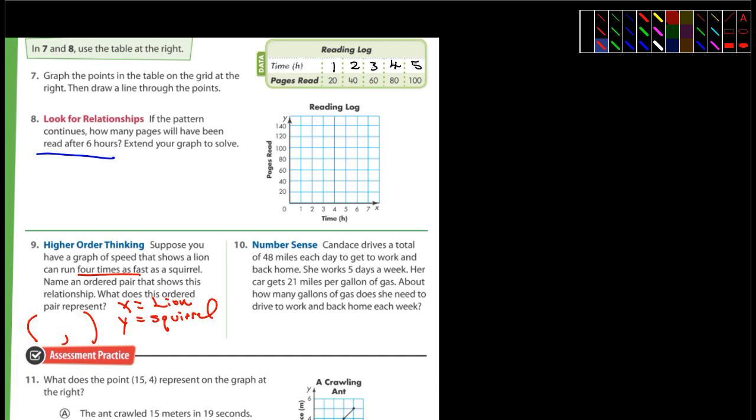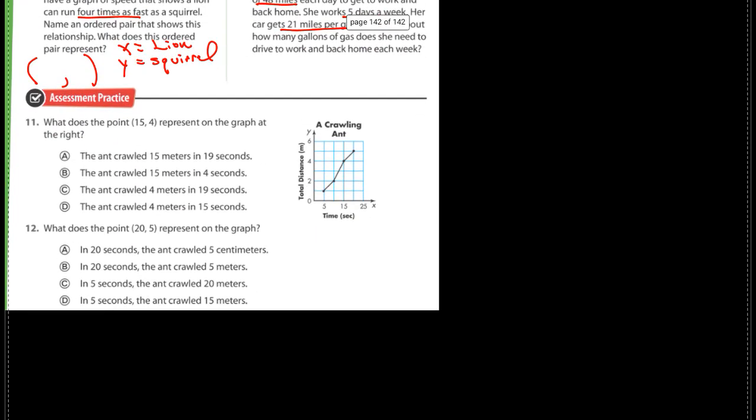Okay, so think of an ordered pair where one would be four times that of the other. Just come up with an ordered pair and we'll see how you guys did with that tomorrow. Number 10: Candace drives a total of 48 miles each day to get to work and back home. She works five days a week and her car gets 21 miles per gallon of gas. About how many gallons of gas does she need to drive to work and back home each week? Well first off, five days a week, 48 miles each day. Well multiply those together. And if her car gets 21 miles per gallon of gas, which is not very good nowadays - mine gets about 32, 34 - you're going to do the first two, multiply those together, and then divide that by 21 and you should have your answer. And I'm about ready for some more coffee.